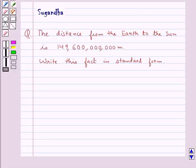Hello and welcome to the session. In this session we discuss the following question which says the distance from the Earth to the Sun is 149,600,000,000 meters. Write this fact in standard form.